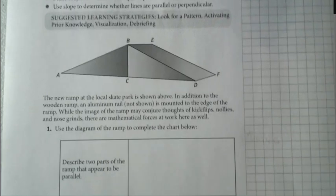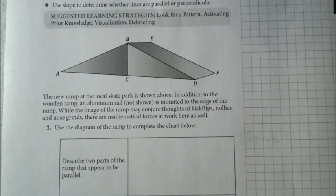On the previous slide, you should have seen the paragraph and the picture that's listed right here that says, The new ramp at a local skate park is shown above. In addition to the wooden ramp, an aluminum rail, not shown, is mounted to the edge of the ramp. While the image of the ramp may conjure thoughts of kickflips, knollies, and nose grinds, there are mathematical forces at work here as well.